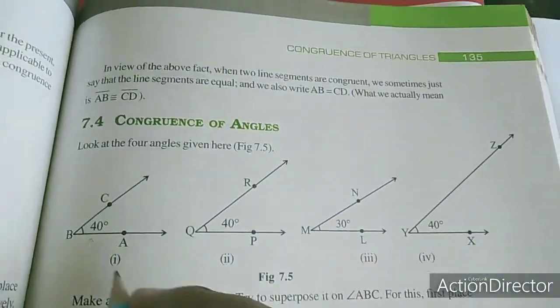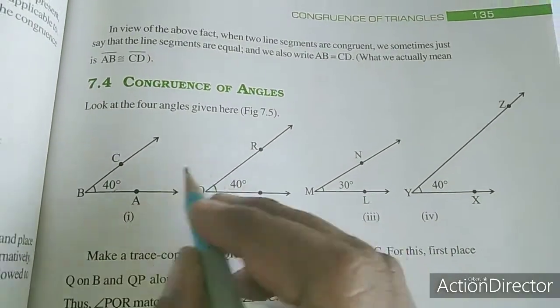Same concept for congruence of angles. If one angle is 40 degrees and another is 40 degrees, these two angles are congruent.